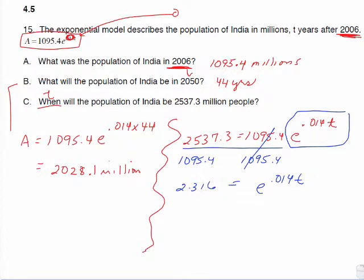To undo e to the, all we have to do is take the natural log of both sides. So on the right side, ln e cancels out. I'm not actually going to do the ln of 2.316 yet.